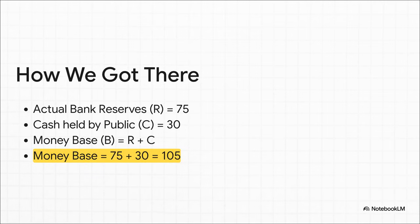Quick recap — how did we get there? We took the actual bank reserves, which were 75, then we added the cash held by the public, which was 30. That simple addition — 75 plus 30 — gives us our final answer of 105.